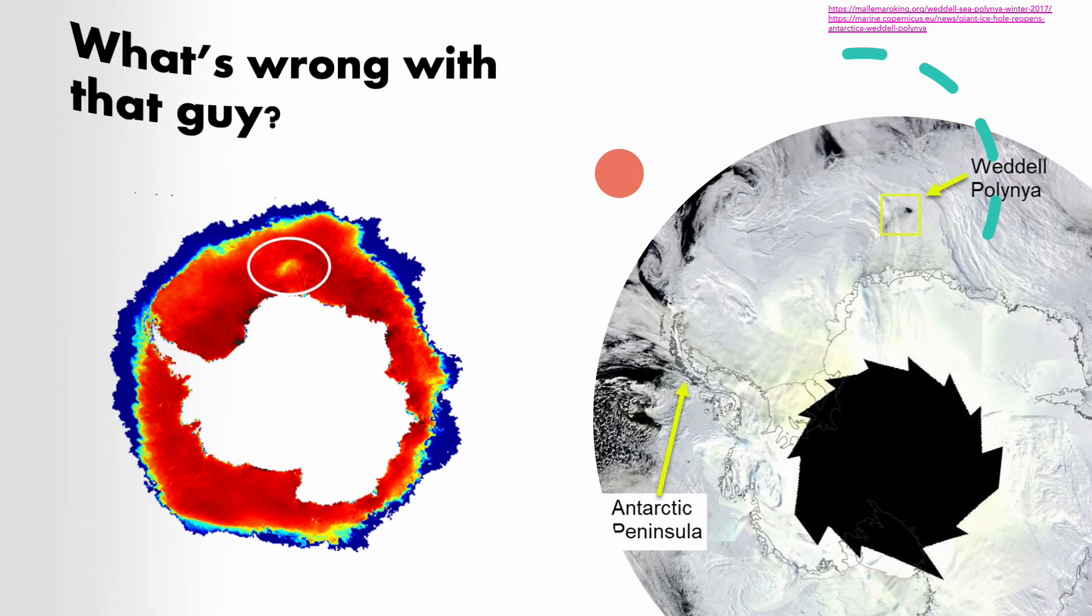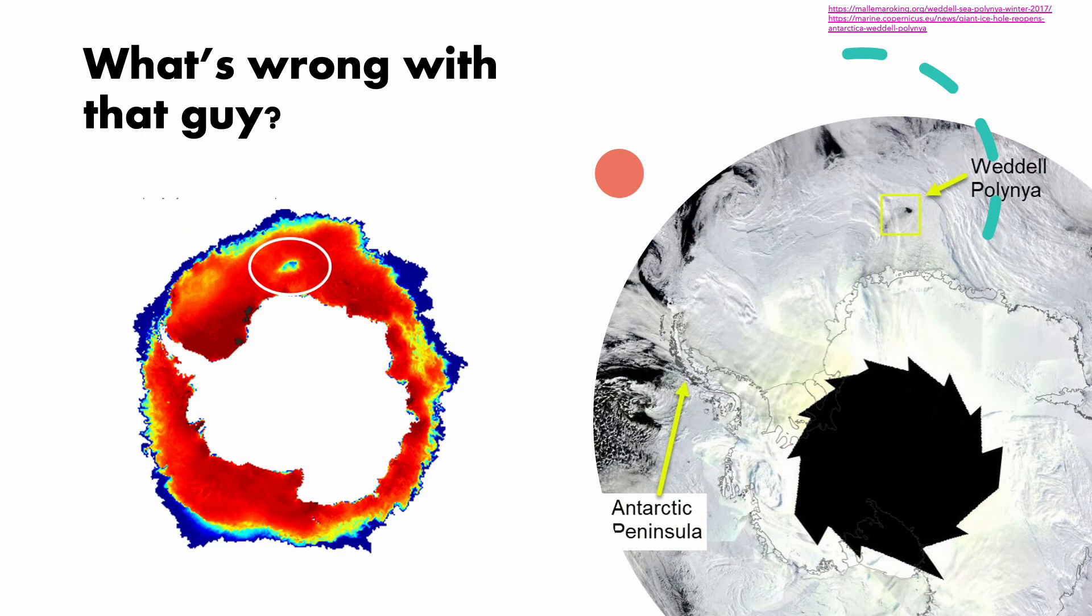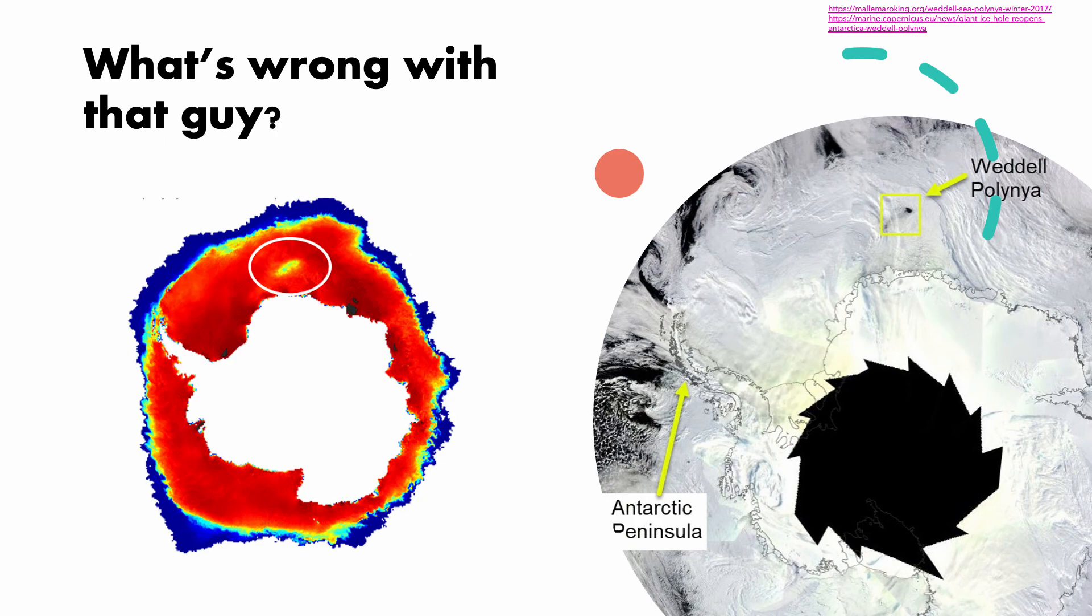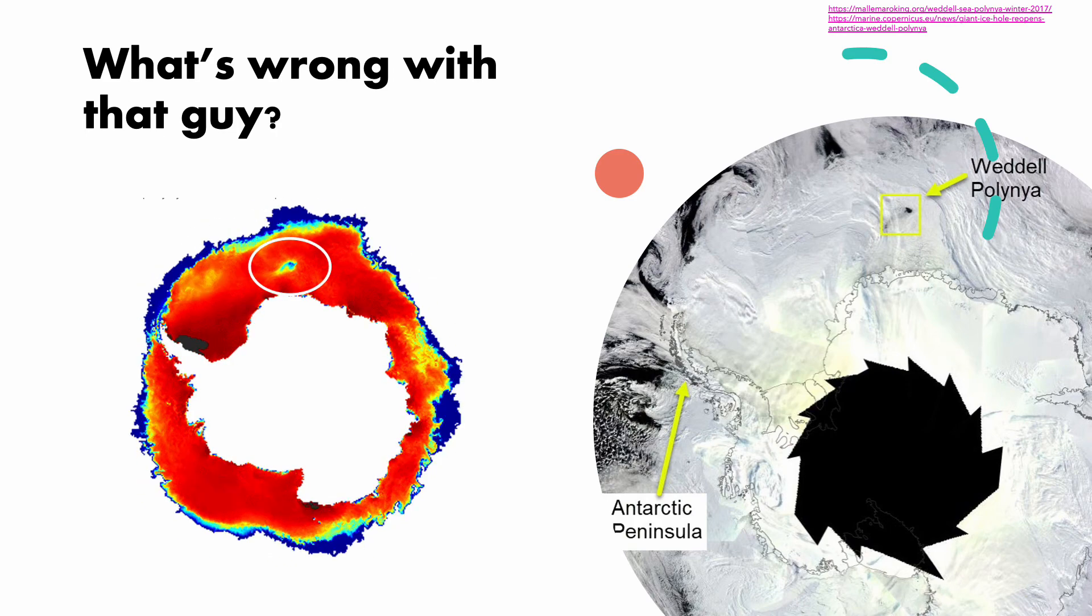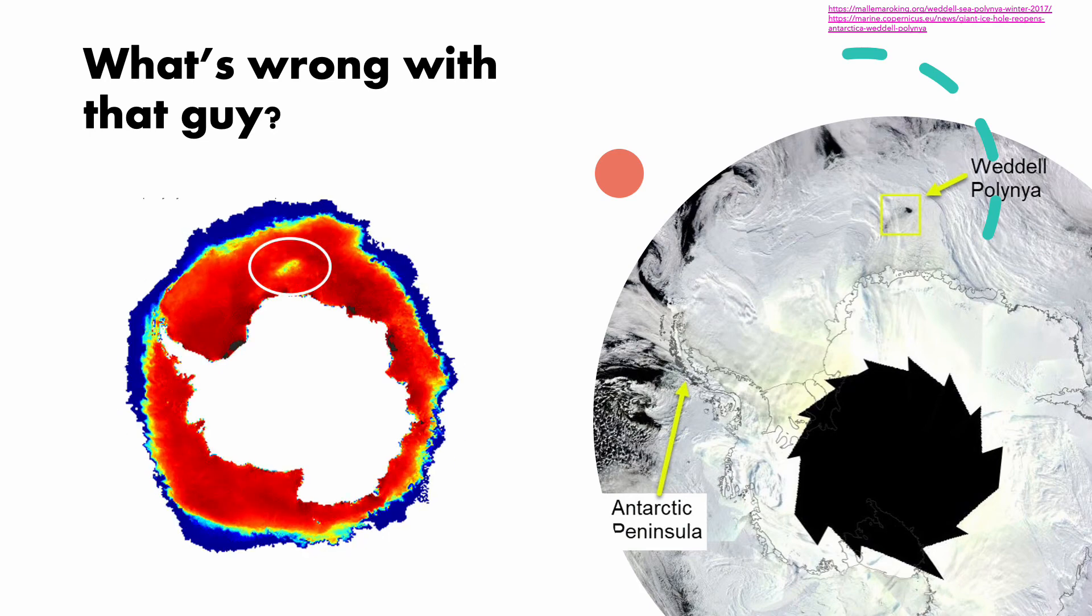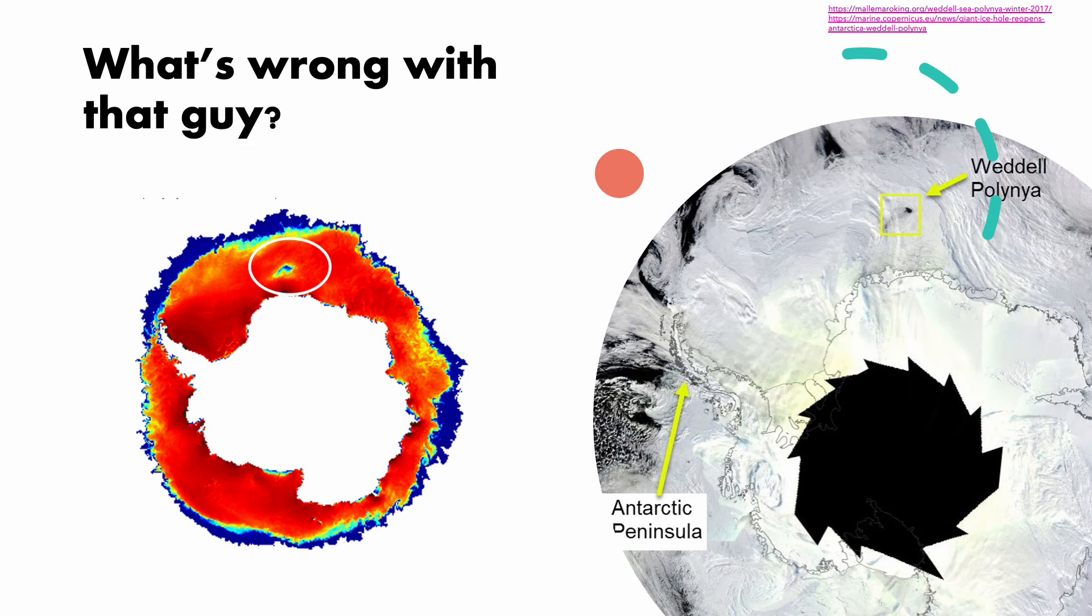Back to the Polynyas. As you can see on this satellite photo, and the sea ice fraction measurement to the left, Polynyas can also occur off coast. This one is called the Weddell Polynya, and has appeared many times, here in 2017.